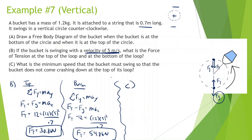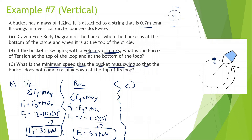Part C is a bit more complicated. It says what is the minimum speed that the bucket must swing so that the bucket does not come crashing down at the top of its loop? When it's spinning very, very fast, there's going to be a lot of force of tension. But as it's not spinning as much, the force of tension is going to decrease. So we should know that the minimum speed — where the bucket does not come crashing down — is when the force of tension is essentially zero. It's swung so lightly that there's barely any tension at the very top, so there's only one force: the force of gravity going straight down.